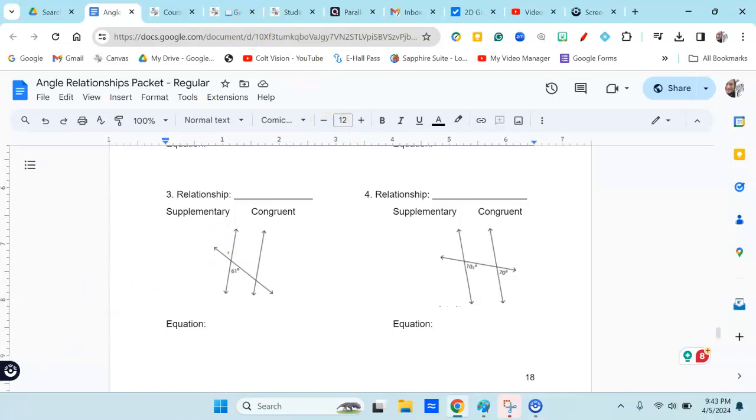I'm going to decide what kind of relationship that is, and it is a vertical relationship because the angles are vertical to each other. Because it's a vertical relationship, these two angles are congruent. So what equation would I write? Well, if they're congruent, that means they're equal.